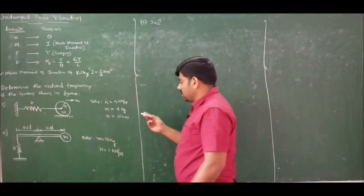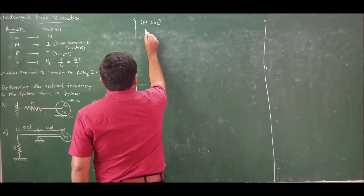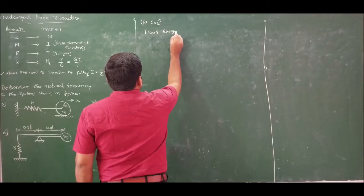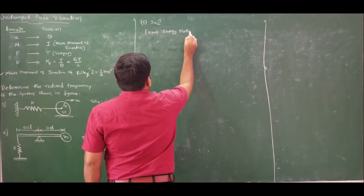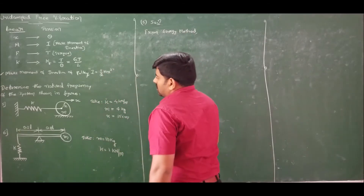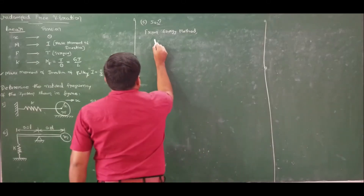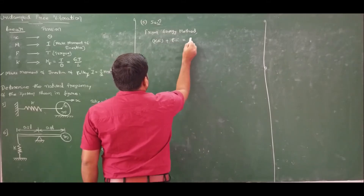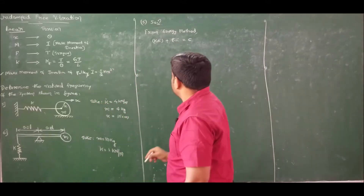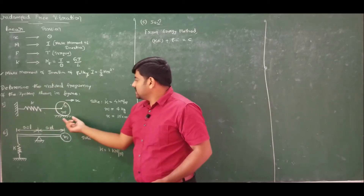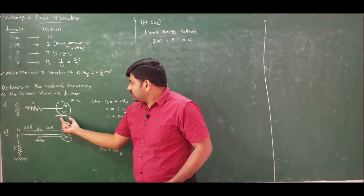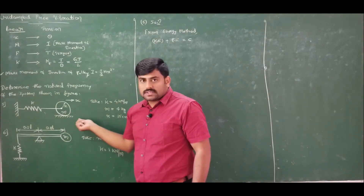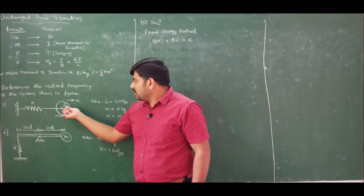As usual, using the energy method: kinetic energy plus potential energy is constant. Now, what is the kinetic energy of the system? The kinetic energy has two components because of two types of displacements — one is the linear displacement of the pulley rolling over the surface, and the other is torsional vibration of the pulley.